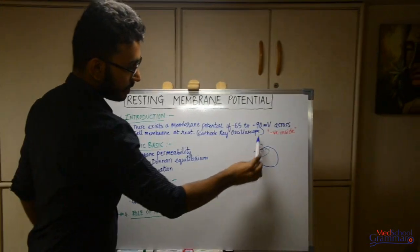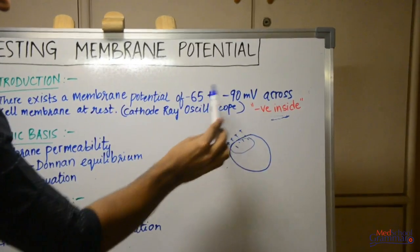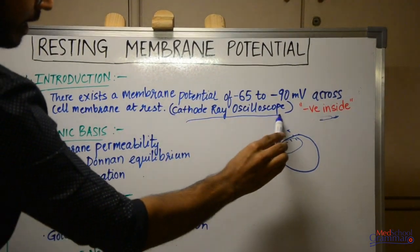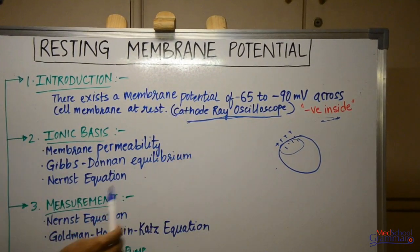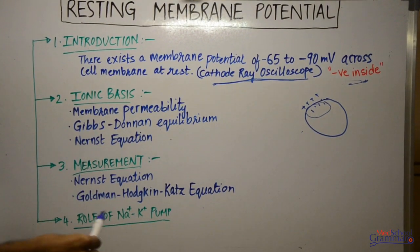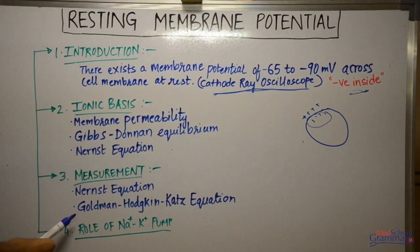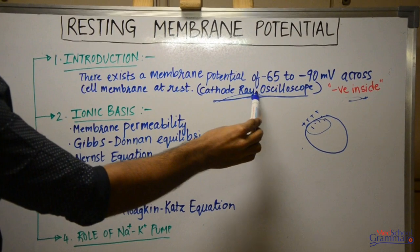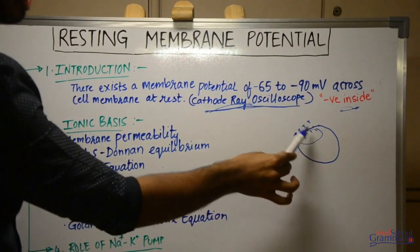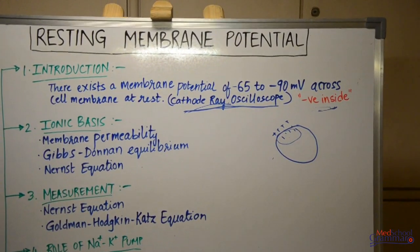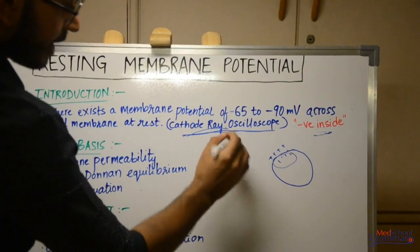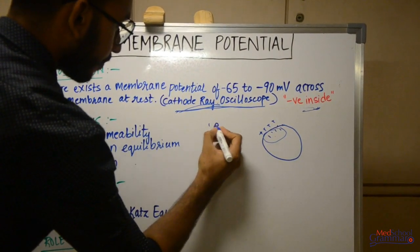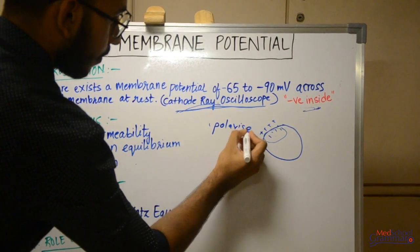Like we said, the inside is always negative — that's what the negative sign indicates. The measurement of this is done by an instrument called cathode ray oscilloscope. In theory, it is measured using the Nernst equation and Goldman-Hodgkin-Katz equation. When the cell is at rest and resting membrane potential is present, we say that the cell is polarized.